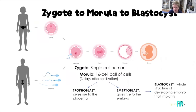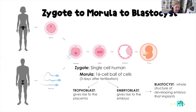Let's talk about the cell division that's happening. The egg and sperm meeting gives us fertilization. The zygote is the single-celled human being. As soon as that zygote undergoes a couple of rounds of cell division, we have what's called a morula, which is a 16-cell ball of cells — about three days after fertilization. Then we end up with a blastocyst, which is the whole structure of a developing embryo. It's the blastocyst that actually implants into the uterus.